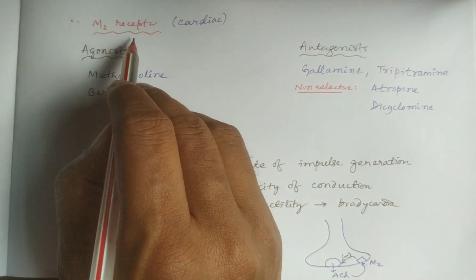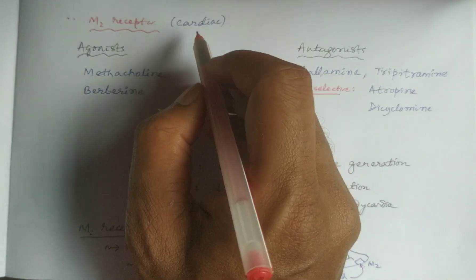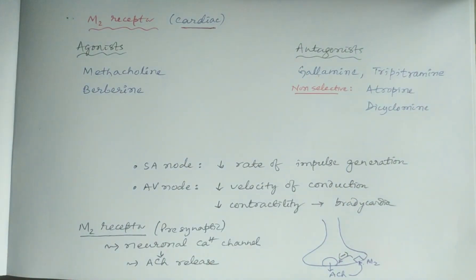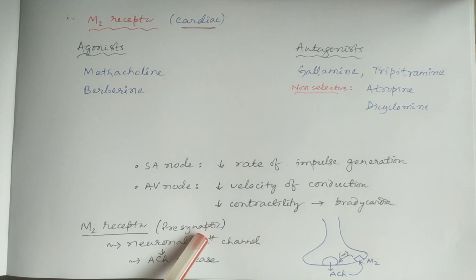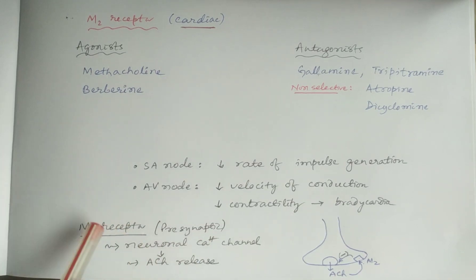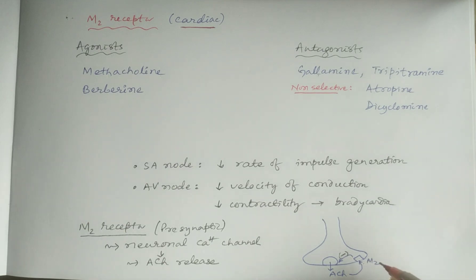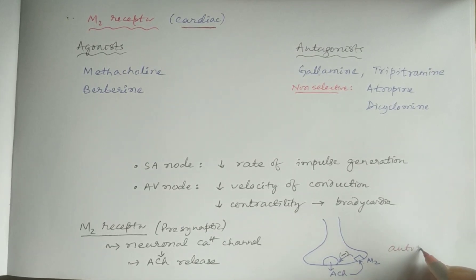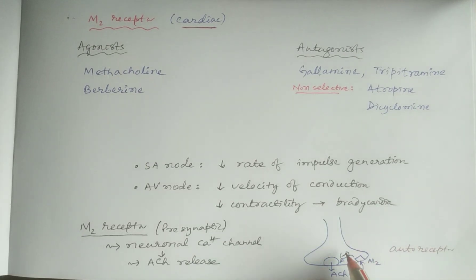Today we will study the M2 receptor, whose location is mainly cardiac — in the heart — and also presynaptic. M2 receptors are located on neurons or nerve endings from which acetylcholine is released, and they inhibit their own release. This is called auto-inhibitory, so M2 receptor is also called the auto-receptor.